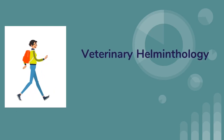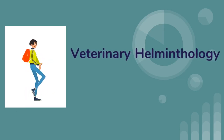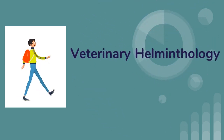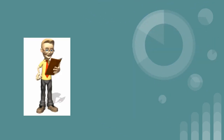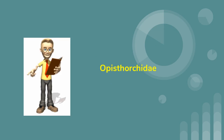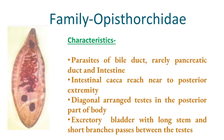Veterinary Helminthology. Today we will learn about the family Opisthorchiidae. Parasites of this family live in the bile duct, rarely in the pancreatic duct and the intestine.